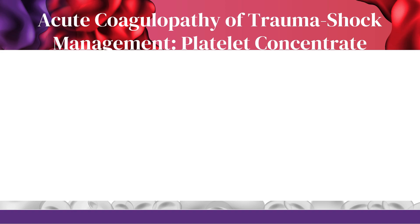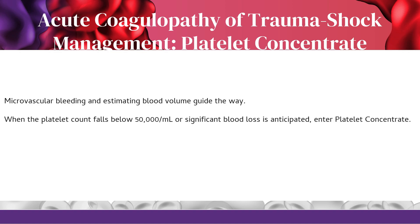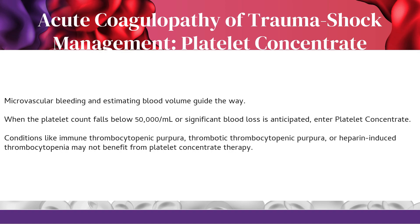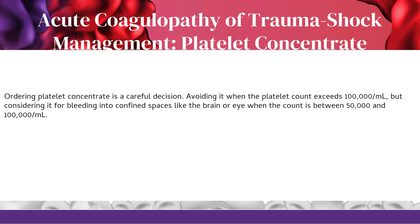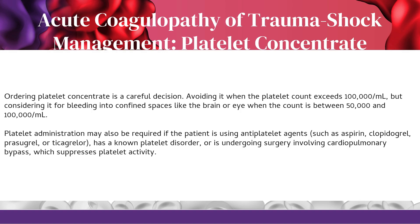When the platelet count falls below 50,000 per milliliter or significant blood loss is anticipated, platelet concentrate is indicated. Conditions like immune thrombocytopenic purpura, thrombotic thrombocytopenic purpura, or heparin-induced thrombocytopenia may not benefit from platelet concentrate therapy. Platelet concentrate should be avoided when the count exceeds 100,000 per mL, but considered for bleeding into confined spaces like the brain or eye when the count is between 50,000 and 100,000 per mL. It may also be required for patients on anti-platelet agents such as aspirin, clopidogrel, prasugrel, or ticagrelor, those with known platelet disorders, or patients undergoing cardiopulmonary bypass.